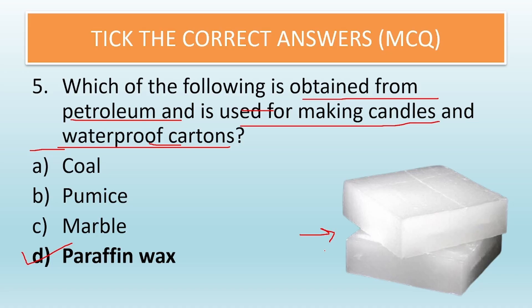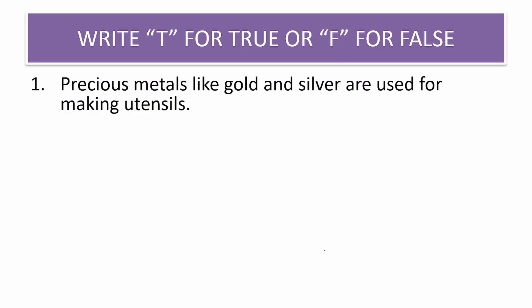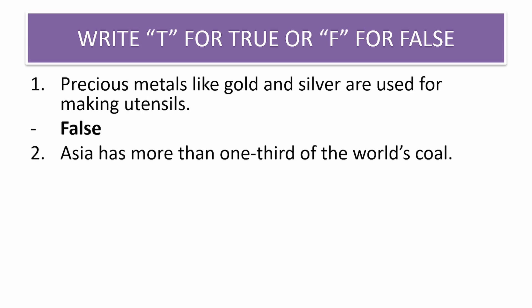Now write T for true or F for false. First: precious metals like gold and silver are used for making utensils — the answer is false. We don't generally use gold and silver for making utensils. Next: Asia has more than one third of the world's coal — that is true, it is a fact.